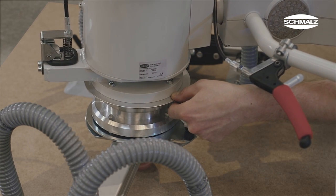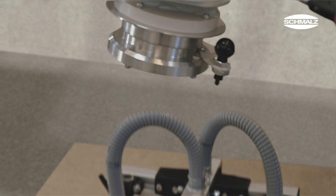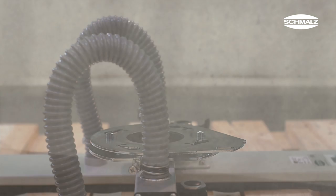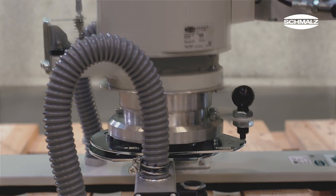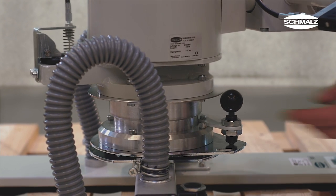Furthermore, the Jumbo Ergo can optionally be equipped with a quick change system. This system enables the vacuum gripper to be changed without tools in just a few steps.